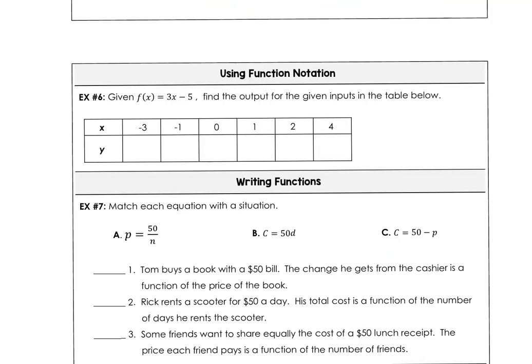For example 6, we want to use function notation with our equation here, y equals 3x minus 5. And I want to substitute negative 3. So negative 9 minus 5 is going to give us negative 14. 3 times negative 1 minus 5 is negative 8. 3 times 0 minus 5 is negative 5. And then substituting 1, we get negative 2. Substituting 2, we get positive 1. And substituting 4, we get 7.